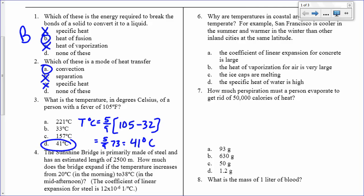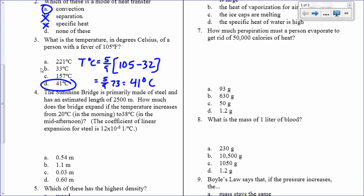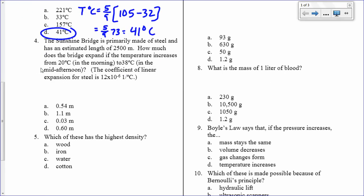The sunshine bridge is primarily made of steel and has an estimated length of 2,500 meters. How much does the bridge expand if the temperature increases from 20°C in the morning to 38°C in the midafternoon? There's the coefficient of linear expansion. Delta L is equal to L_0 times alpha times delta T. L_0 is the original length, that's 2,500 meters.